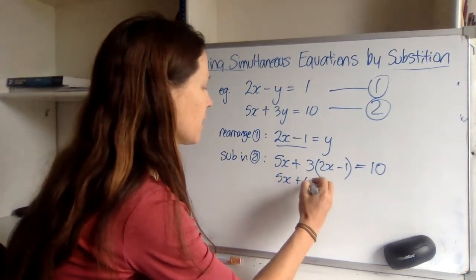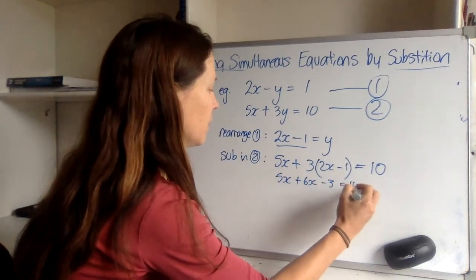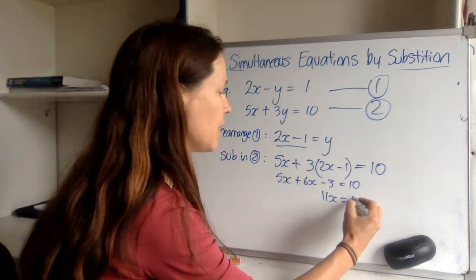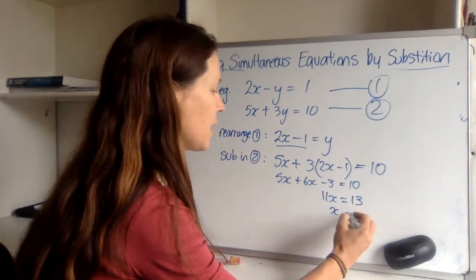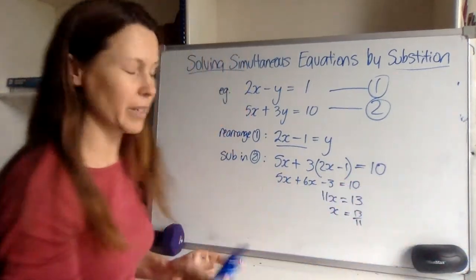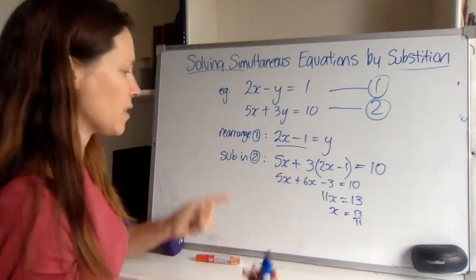Let's start by expanding the brackets, and then gathering up our x's, adding 3 to both sides. And I can see that x is 13 elevenths. Now I just made the question up, so obviously it didn't come out as a whole number, but that's fine.